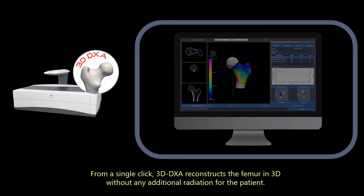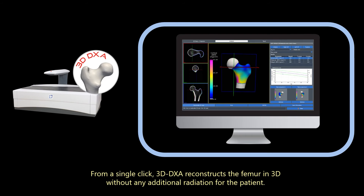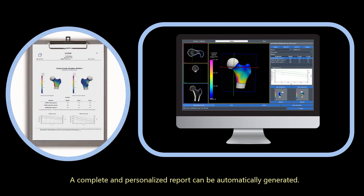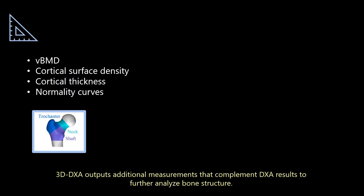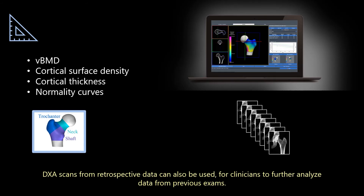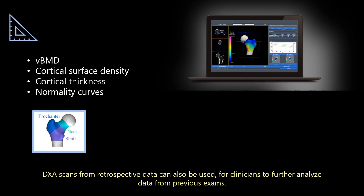From a single click, 3D DEXA reconstructs the femur in 3D without any additional radiation for the patient. A complete and personalized report can be automatically generated. 3D DEXA outputs additional measurements that complement DEXA results to further analyze bone structure. DEXA scans from retrospective data can also be used for clinicians to further analyze data from previous exams.